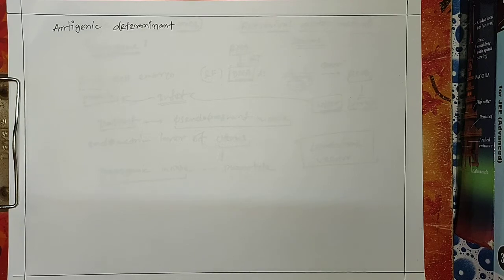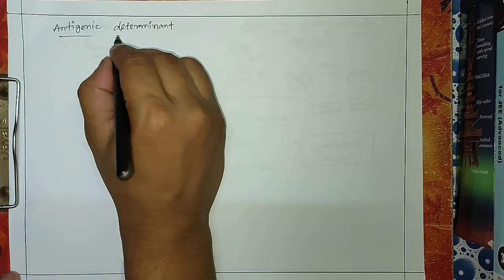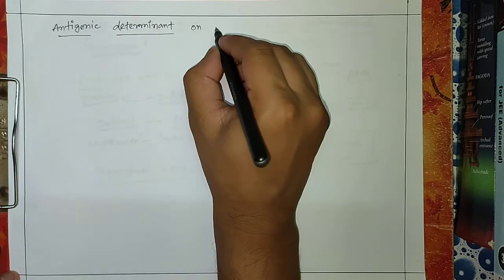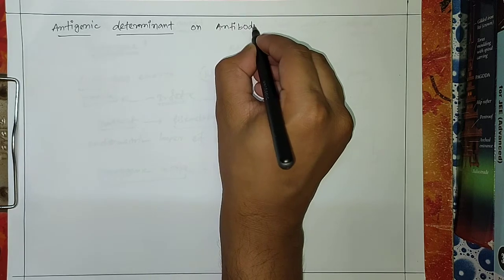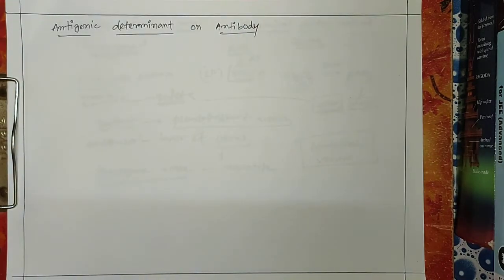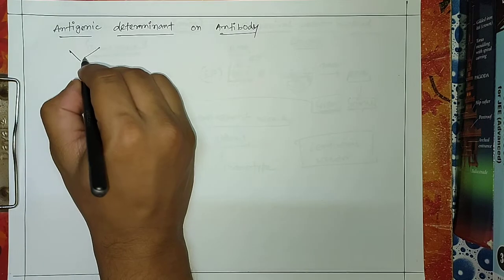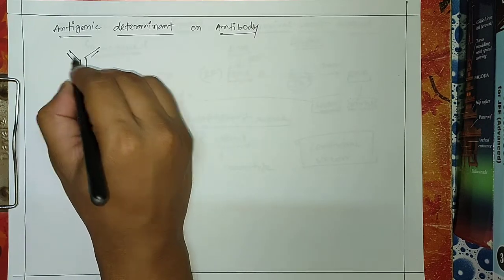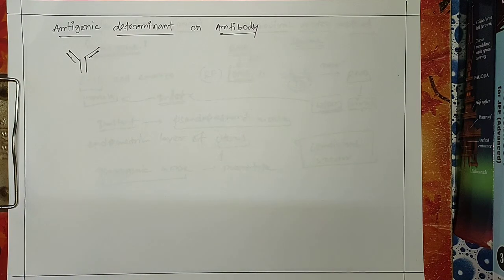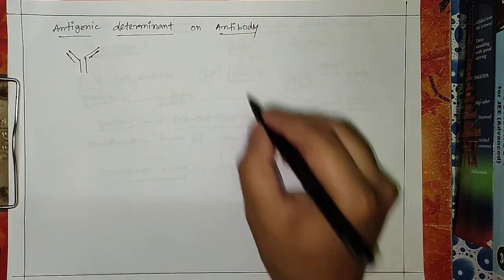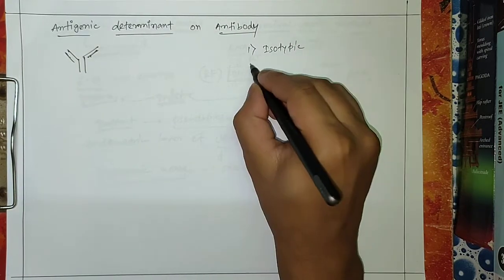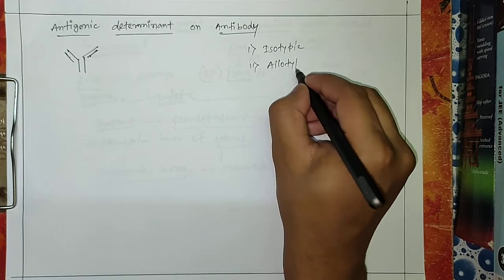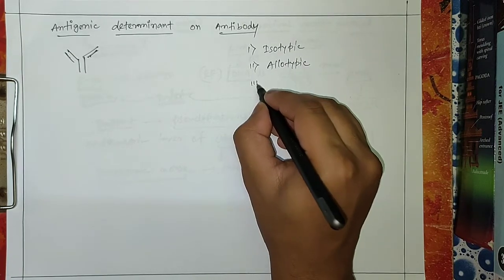Today we will discuss antigenic determinants on antibodies. If you consider an antibody, there are light chains and heavy chains. They have different types of antigenic determinants. There are three types: first is isotypic, second is allotypic, and third is idiotypic.